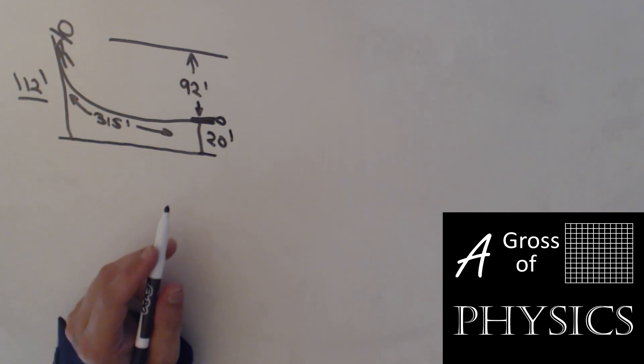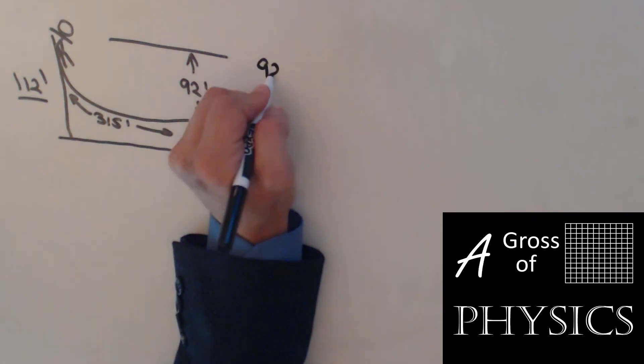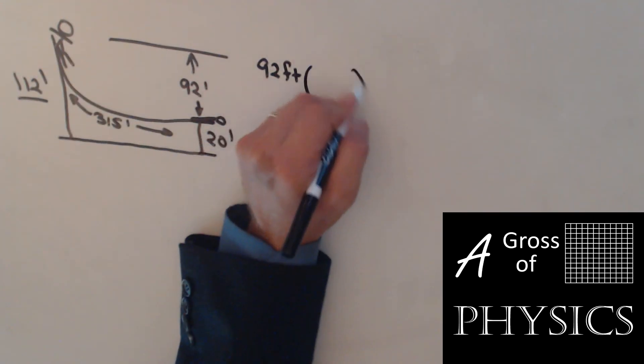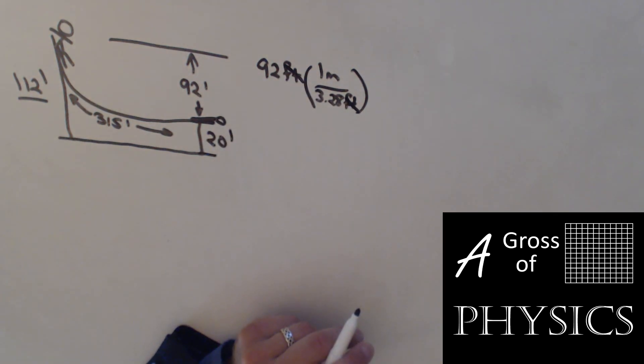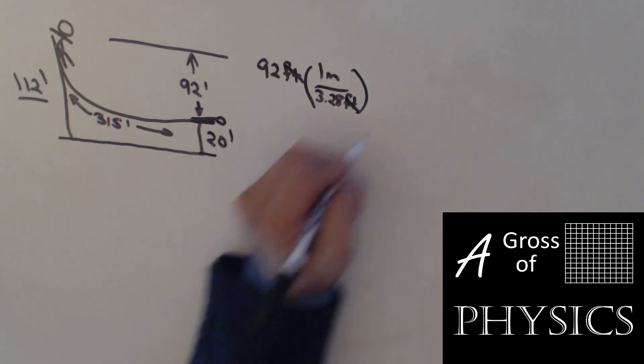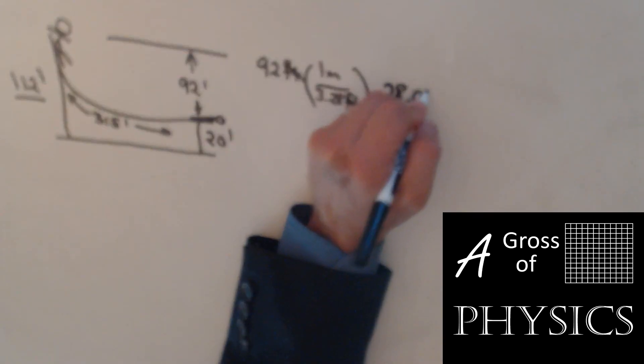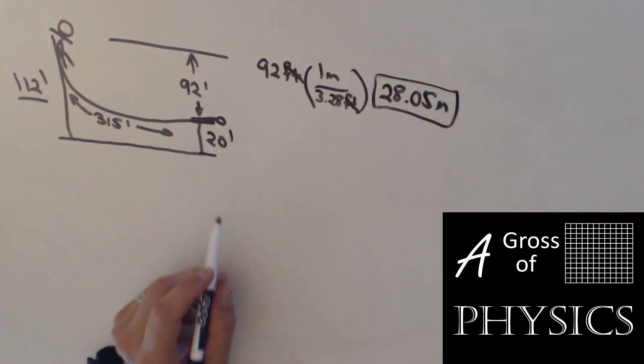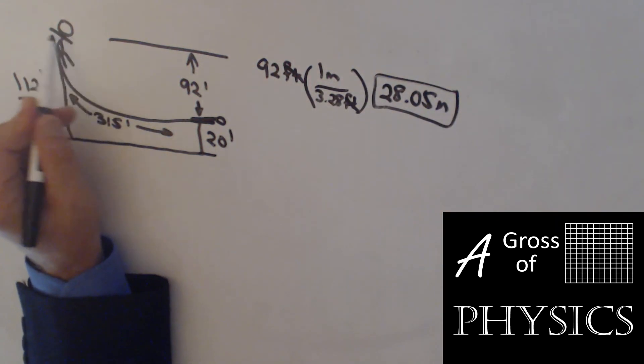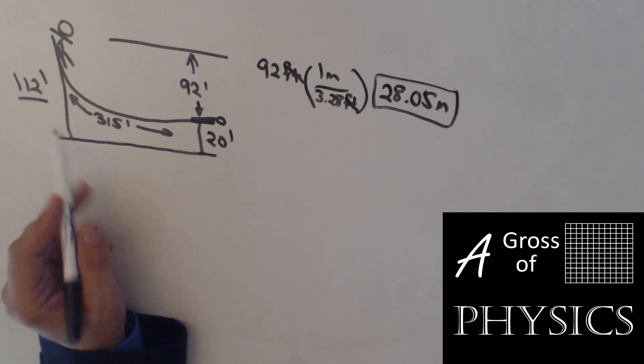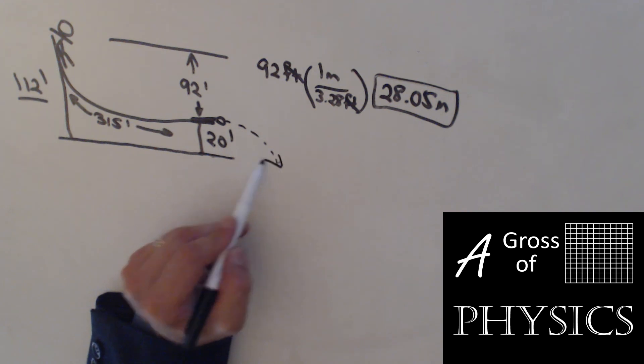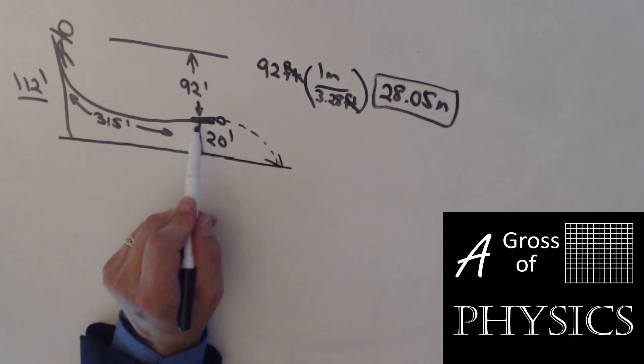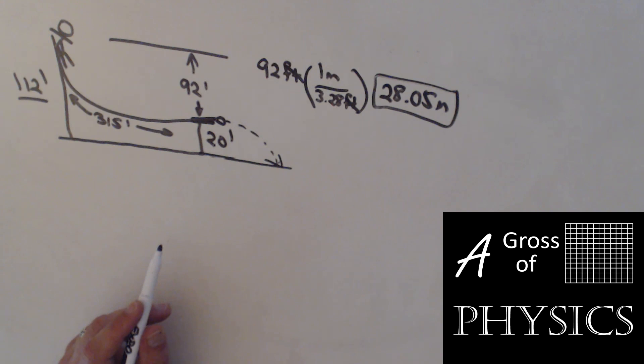Now we need to convert that 92 into meters. So 92 feet—we have to remember that one meter is 3.28 feet. The feet will disappear, and 92 divided by 3.28 gets me 28.05 meters. And that's going to be the top part of the problem. Not the top part of the launch because we still don't land on the ground. Another problem may ask us to find what happens after the person leaves the ski jump. But for now, we're just finding how fast you're leaving the jump.